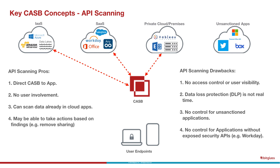The data loss protection is not real time. APIs are scanning after the fact — after the file has already been uploaded, after sharing permissions have already been set. They may catch things in the first few seconds or it may take a few minutes depending on the API and how often things are scanned. Keep in mind that many leakages and data exfiltrations happen within the first few seconds of a file being uploaded into a cloud service.